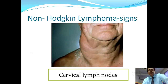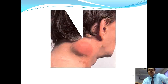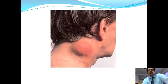A clinical image shows bulky lymphadenopathy — a single lymph node in the posterior occipital area, appearing smooth, somewhat irregular, and reddish. Biopsy is required to confirm the diagnosis, as Hodgkin lymphoma can present similarly to NHL.